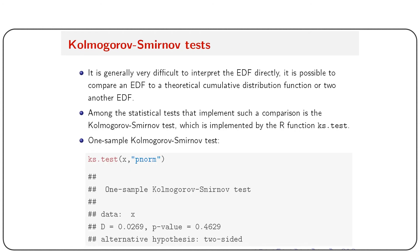The Kolmogorov-Smirnov test is used because it can be difficult to interpret the EDF directly. It is possible to compare an EDF to a theoretical CDF or to another EDF. The one-sample KS test is applied as ks.test(x, pnorm), where x was generated from the standard normal distribution. The p-value of 0.608 is not significant, meaning we fail to reject the null hypothesis that the data is normally distributed.